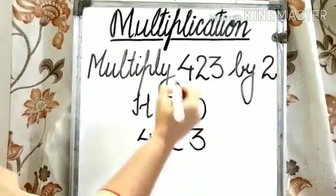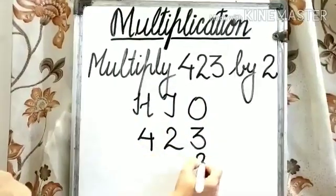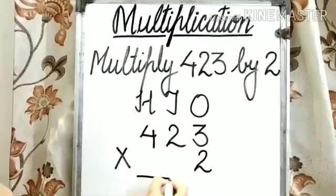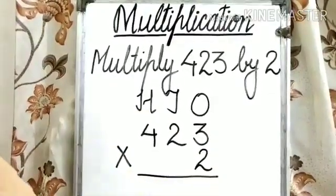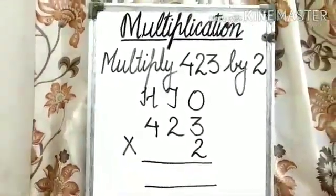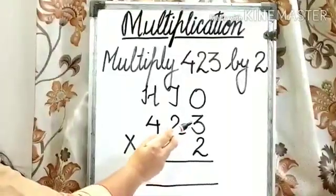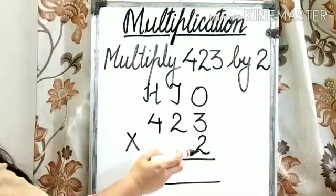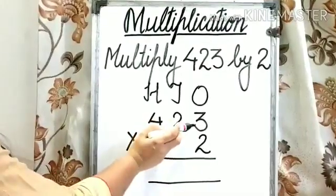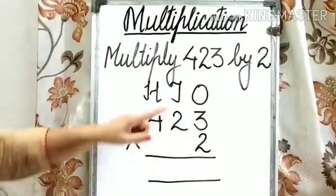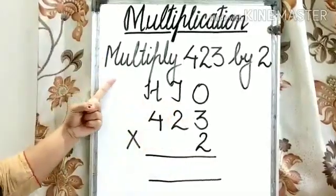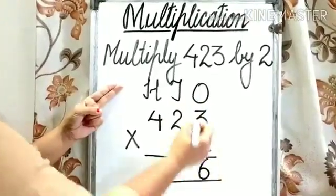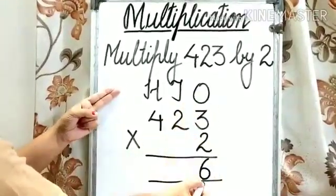423 multiplied by 2. Put the symbol of multiplication and start multiplying. Step 1: multiply the digit at the 1s place by 2, meaning we need to multiply 3 by 2. 3 2s are 6. So write down 6 under the 1s column.